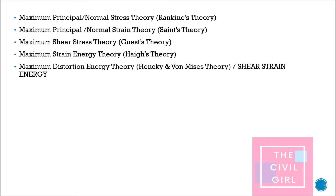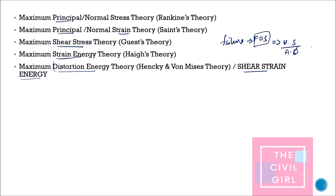The five theories are: maximum principal stress theory, principal strain theory, maximum shear stress theory, strain energy theory, and distortion energy theory. Distortion energy is also called shear strain energy. Associated with the term failure is the factor of safety, which equals ultimate stress divided by allowable stress.